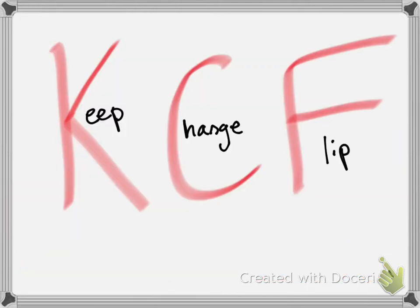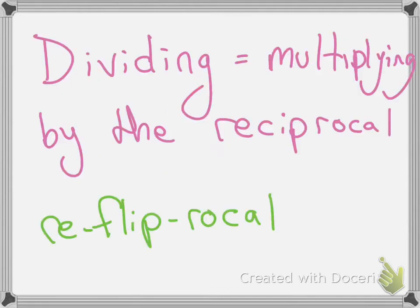So KCF — keep, change, flip. Whenever you're doing division, you've got a Kentucky Chicken Fried. Dividing is multiplying by the reciprocal.